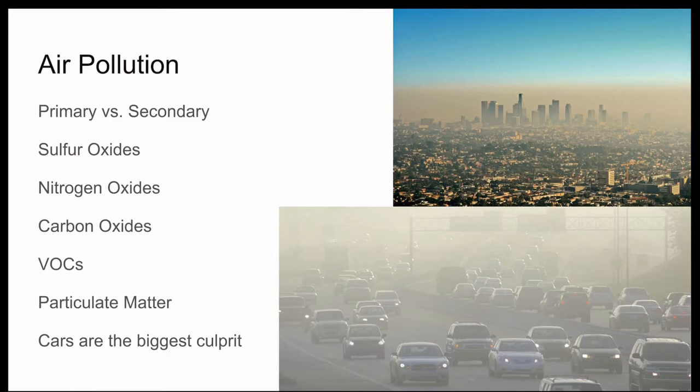Carbon monoxide can interfere with the blood's ability to carry oxygen, which can cause drowsiness or death. This is why your home has a carbon monoxide detector. Carbon dioxide, also produced from car exhaust, is the quintessential greenhouse gas. Volatile organic compounds are organic chemicals — meaning they contain carbon — that vaporize readily and turn into toxic fumes. These come from a variety of sources, particularly burning fuel, and they can cause smog and harm plants.